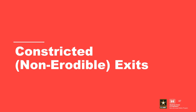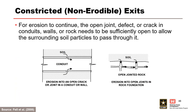The last topic for discussion is constricted or non-erodible exits. Up until this point, the presentation has discussed assessing the particle retention capability of filters. The last exit condition is a constricted or non-erodible exit. For erosion to continue, the open joint, defect, or crack in conduits, walls, or rock needs to be sufficiently open to allow the surrounding soil particles to pass through it.